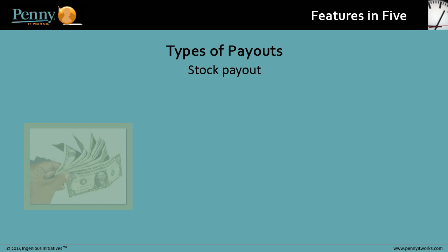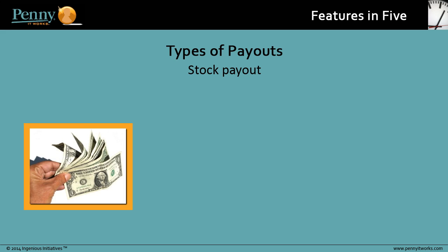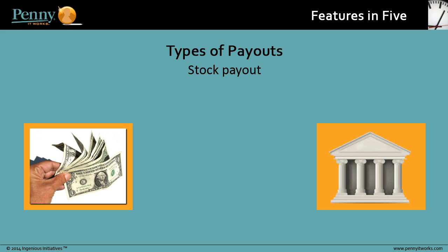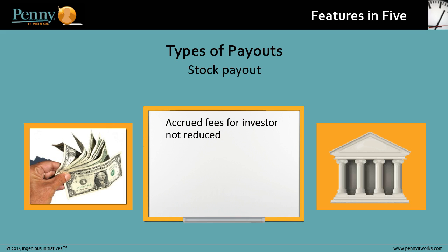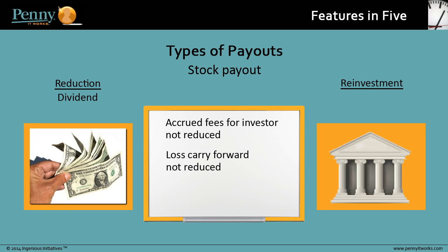In a stock payout, the capital is taken out of the investor's account and reinvested back into the fund at the start of the next period. Accrued fees for the investor are not reduced, and the loss carry forward is not reduced. The reduction transaction is a dividend, and the reinvestment transaction is a contribution. A stock payout is only available for share-based investor roles.